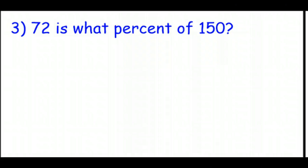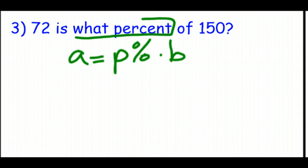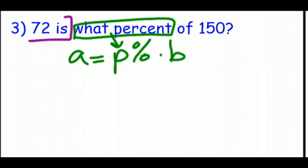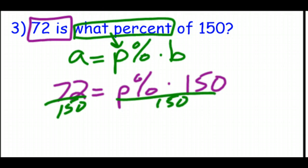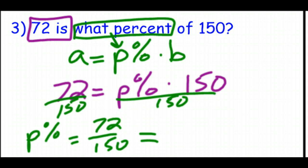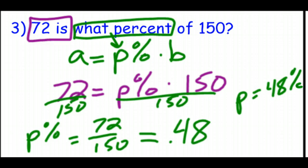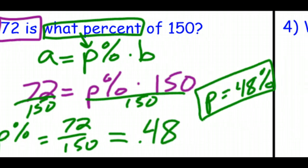Number three: 72 is what percent of 150? We don't know the percent, but A equals P percent times B. A is 72 — the part, not the total. B is 150, the total. So 72 equals P percent times 150. Divide both sides by 150: 72 over 150 equals P. P equals 0.48 as a decimal, which means P is 48%. So 72 is 48% of 150.